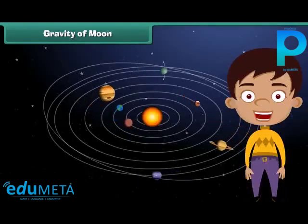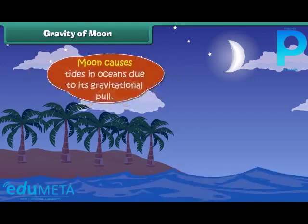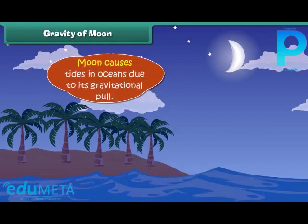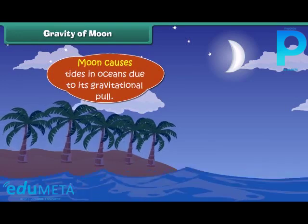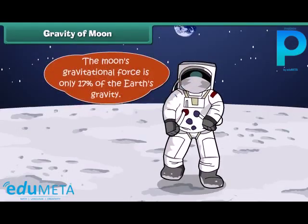While you can find large moons in our solar system, our moon is the biggest relative to the size of the earth, and it is large enough to cause tides in oceans due to its gravitational pull. The moon's gravitational force is only 17% of the Earth's gravity. For example, a 100-pound person weighing 45 kg on Earth would weigh only 17 pounds, or 7.6 kilograms, on the moon.